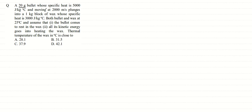In this question we are given a 20 gram bullet whose specific heat is 5000 joule per kilogram per degree Celsius, moving at 2000 meter per second. It plunges into a 1 kilogram block of wax whose specific heat is 3000 joule per kilogram per degree Celsius. Both bullet and wax are at 25 degree Celsius, and assume that the bullet comes to rest in the wax and all its kinetic energy goes into heating the wax. The final thermal temperature of the wax in degree Celsius is close to?